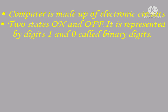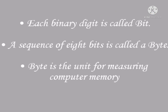A computer has two states: on and off. These two states are represented by 1 and 0. On represents 1, off represents 0. This is called a binary digit. A combination or sequence of zeros and ones is called binary digits.